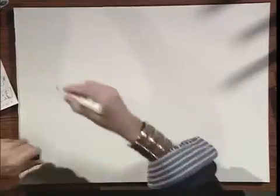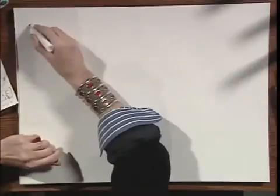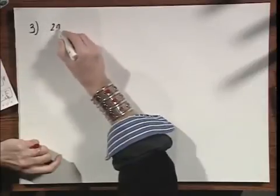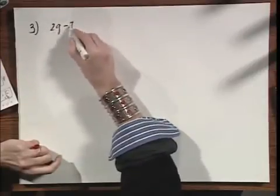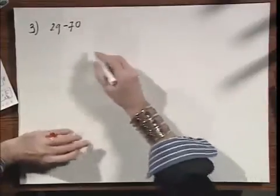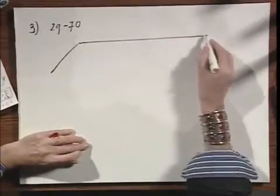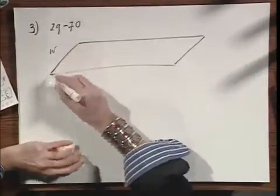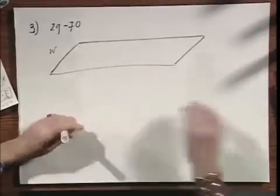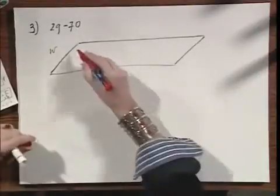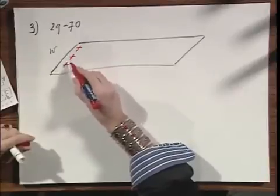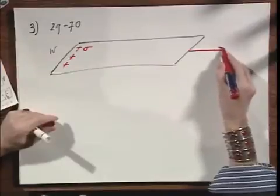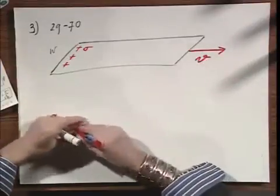We are coming again to an example of Ampere's Law. We have here a very large sheet, very wide, very long, and it has uniform charge density plus everywhere, charge density sigma. And it is moving in this direction with a speed v.